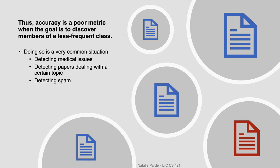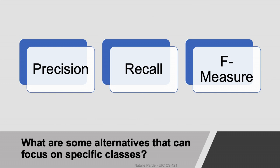A lot of scenarios, in fact, have goals of accurately discovering instances from less frequent classes. For example, medical issues are generally uncommon, but you want to be able to find them when they exist. Likewise, papers about very specific topics are pretty infrequent, and spam email is thankfully slightly less common than non-spam, at least in my inbox. For those scenarios, better alternatives are precision, recall, and F-measure.